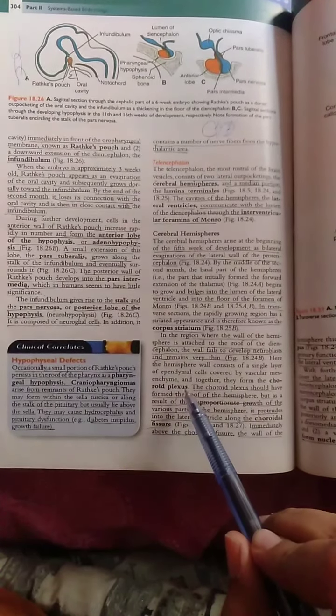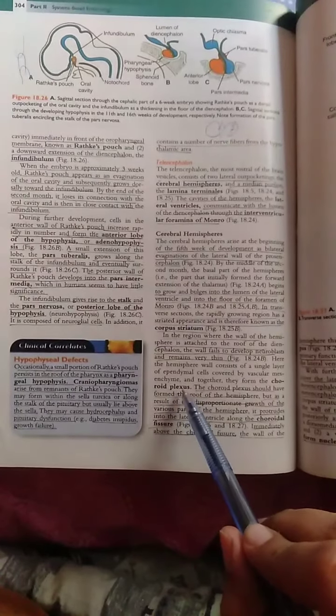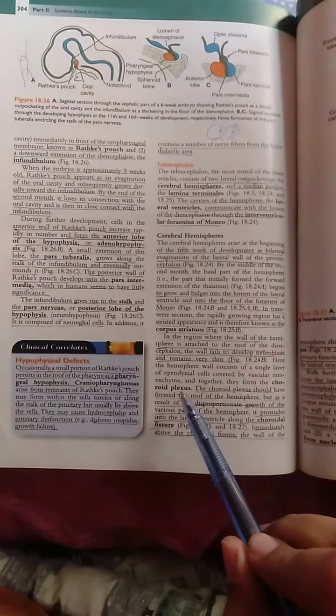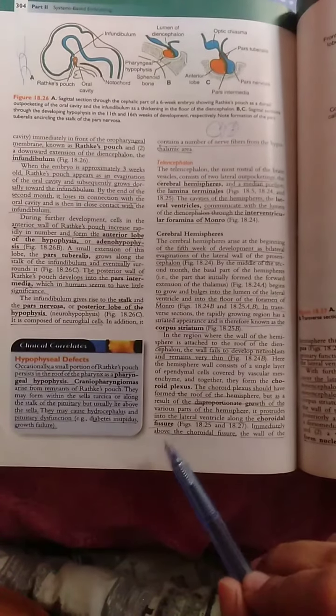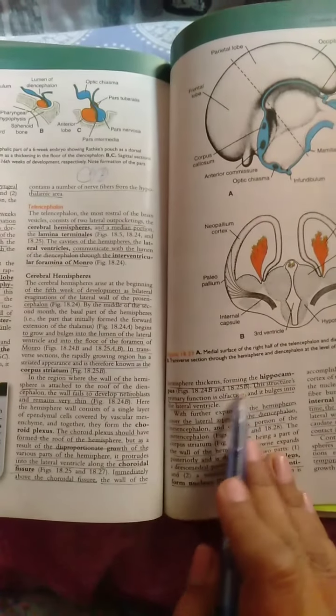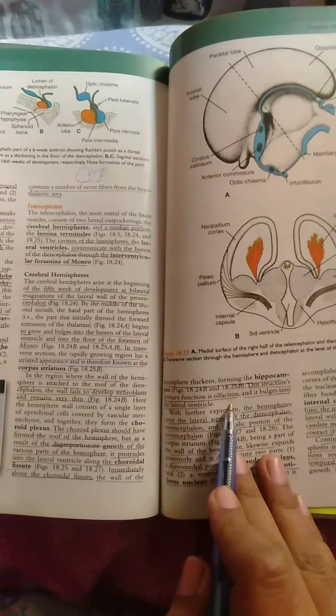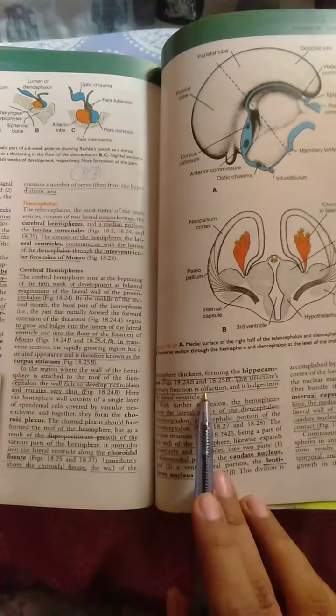Tela choroidea will be called choroid plexus by piercing the choroidal fissure. If we see the choroidal fissure, it will be called hippocampus. The primary function is olfaction.